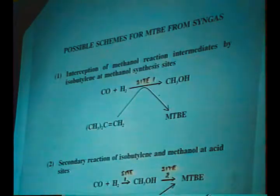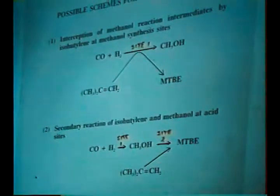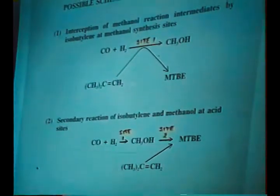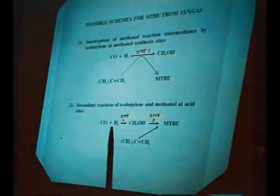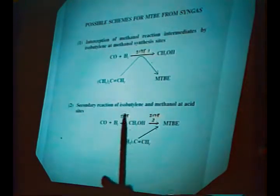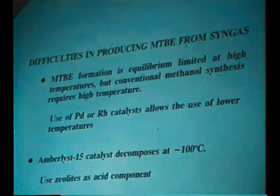The second approach is to start out with a bifunctional catalyst which contains both methanol synthesis sites as well as etherification sites, acid sites, so that the methanol synthesis sites generate methanol, and then the methanol reacts with isobutylene to form MTBE. Very simple concept, but there are a number of difficulties in doing this.